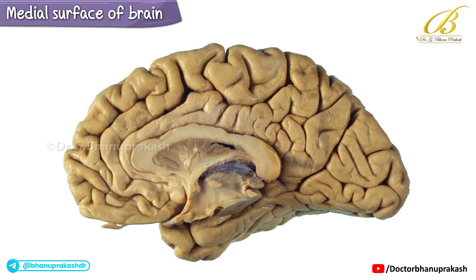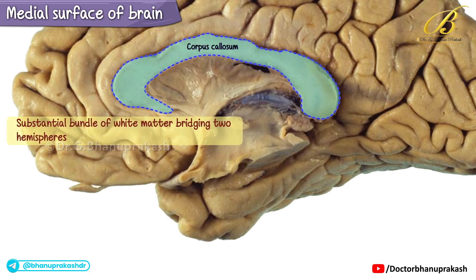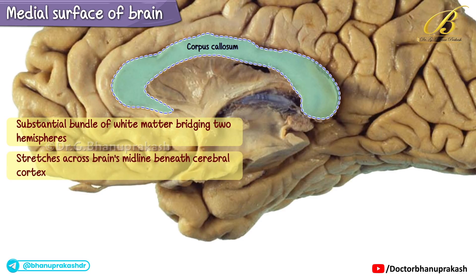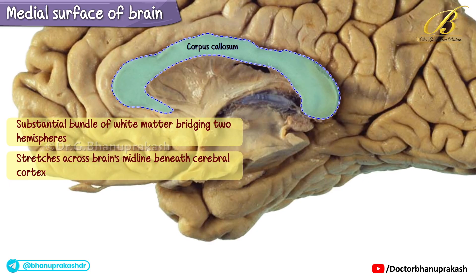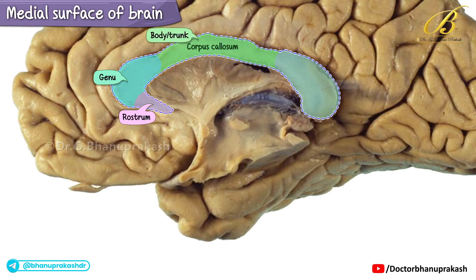We delve deeper into the medial surface of the cerebrum, with the brainstem and cerebellum removed for clarity. Our primary focus here is the corpus callosum, a substantial bundle of white matter that bridges the two hemispheres. This large C-shaped commissure stretches across the brain's midline, beneath the cerebral cortex, connecting the cerebral hemispheres and forming the most extensive part of the brain's white matter. The corpus callosum has distinguishable parts: the genu, rostrum, body or trunk, and splenium.